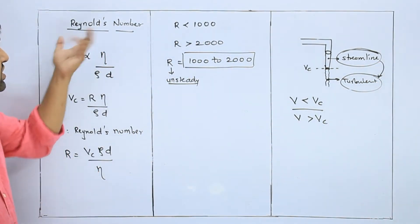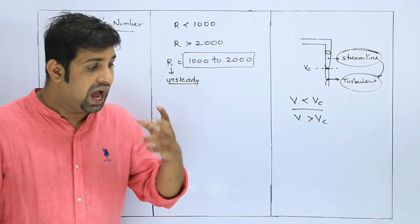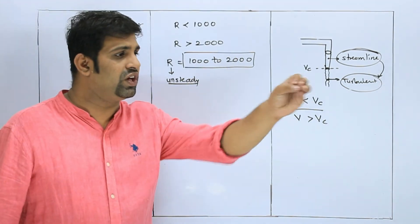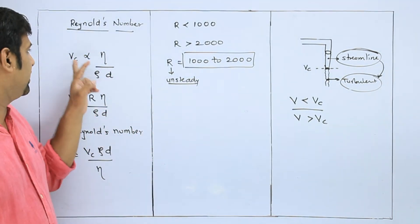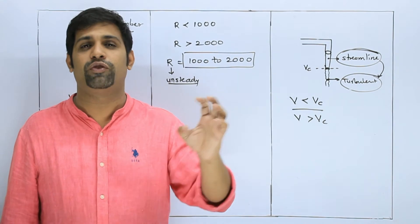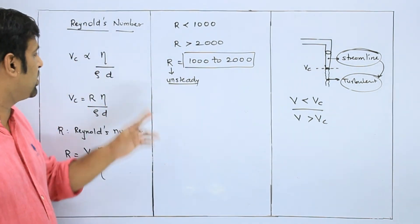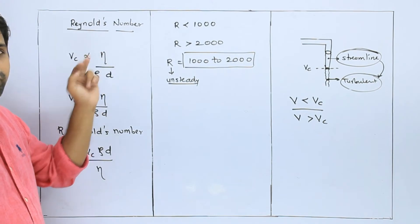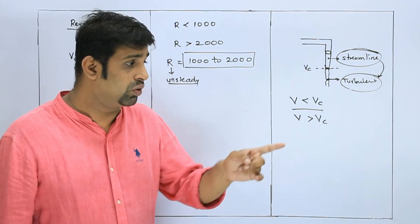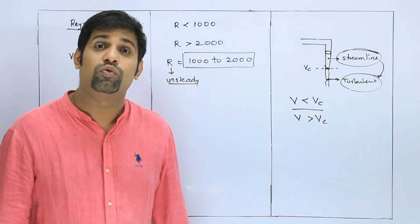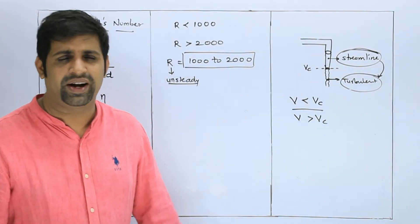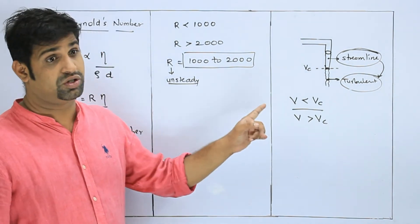So basically, from the Reynolds number we know which type of flow it is. Now think that you are given some values — the liquid flowing through a tube with velocity V. You know all these values. You substitute them in this formula. If R comes out to be 800, then the fluid flow in the tube is streamlined flow. If R is more than 2000 or 2300, then the flow is turbulent.